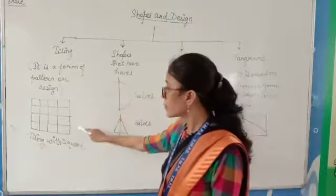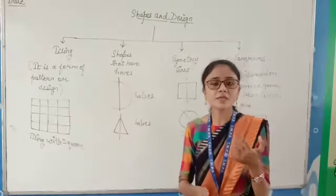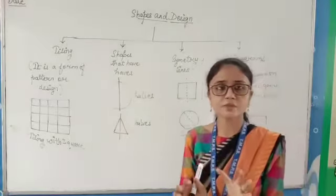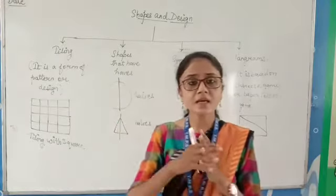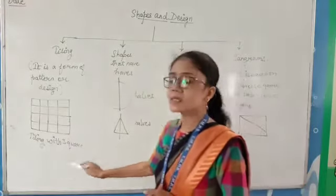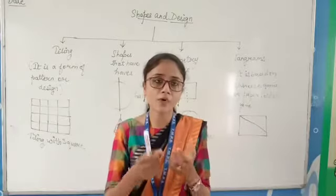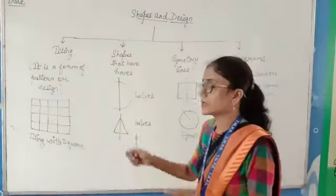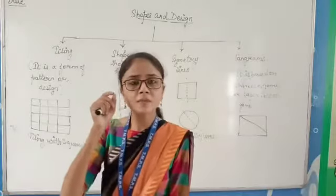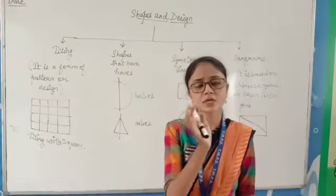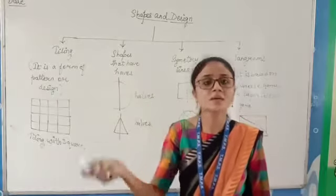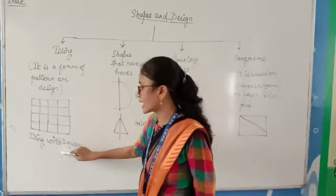Suppose this is a tiling with squares. Tiling can be done with the help of rectangles, triangles, polygons, squares — whatever shapes you have learnt. Tiling is basically done with the help of a particular design or pattern. You can place shapes like this so that it forms a design. This is basically tiling with squares.